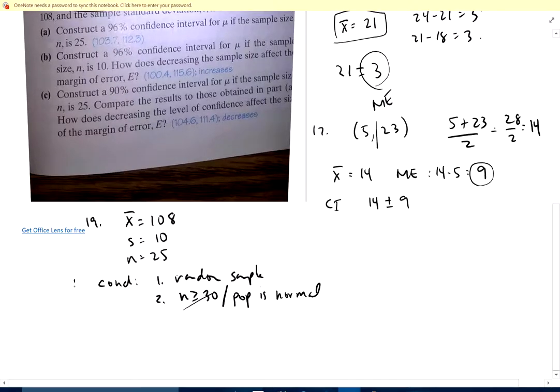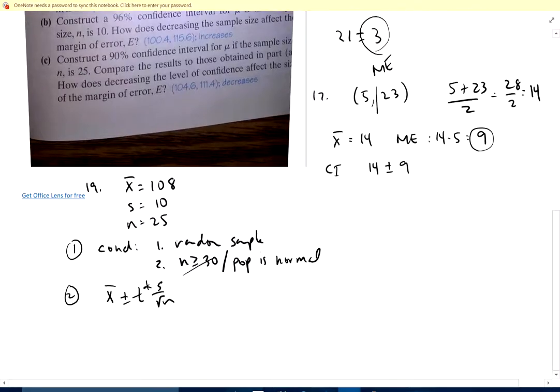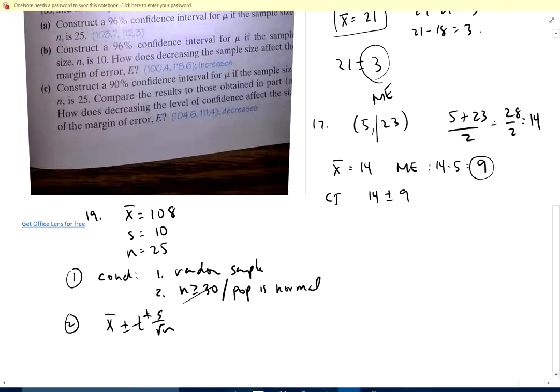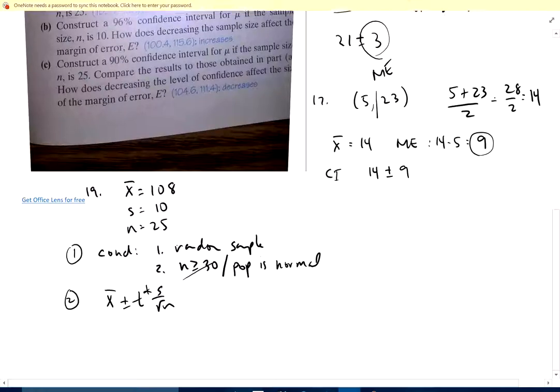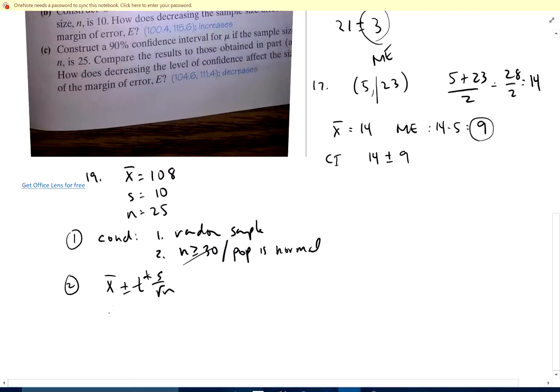Second thing, formula. X bar plus or minus T star s over square root of n, like I said above. We want 96% confidence. I've got my sample, 108 plus I've got to figure out T star by the table in the back, and that's 10 over the square root of 25. I'm going to look this up in the back.